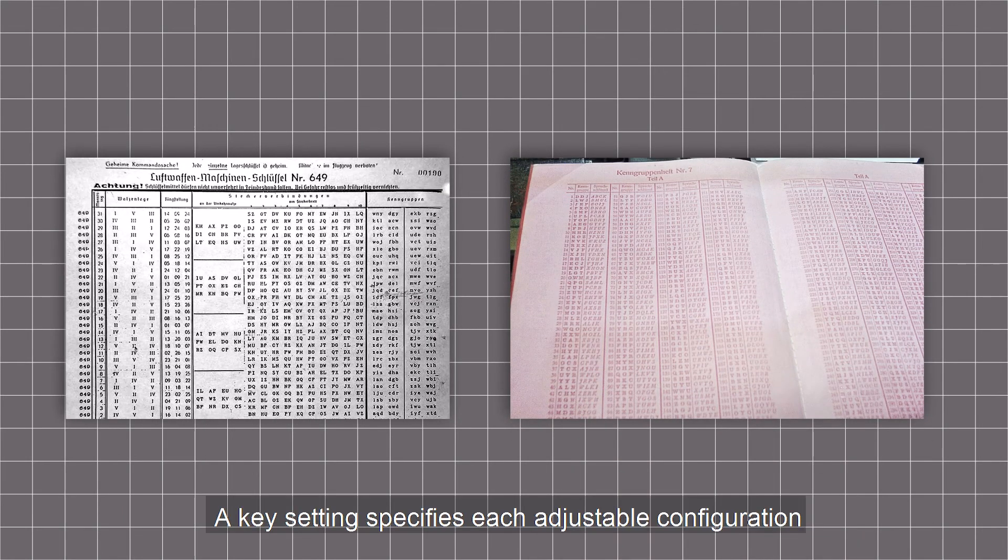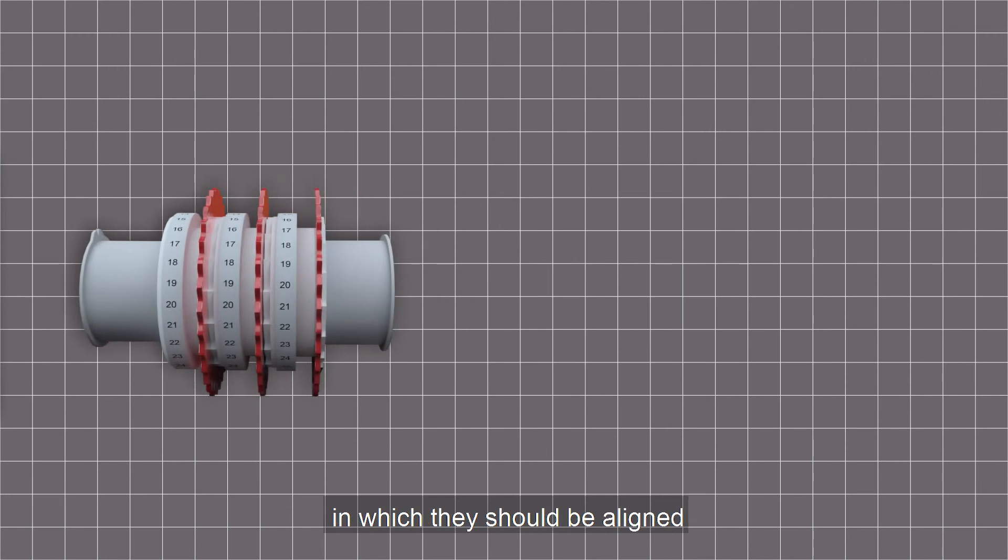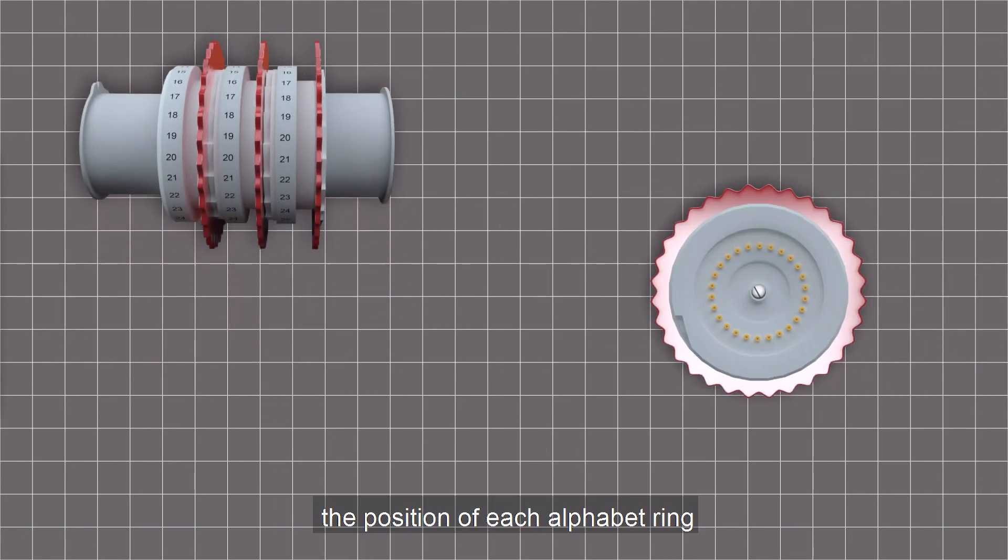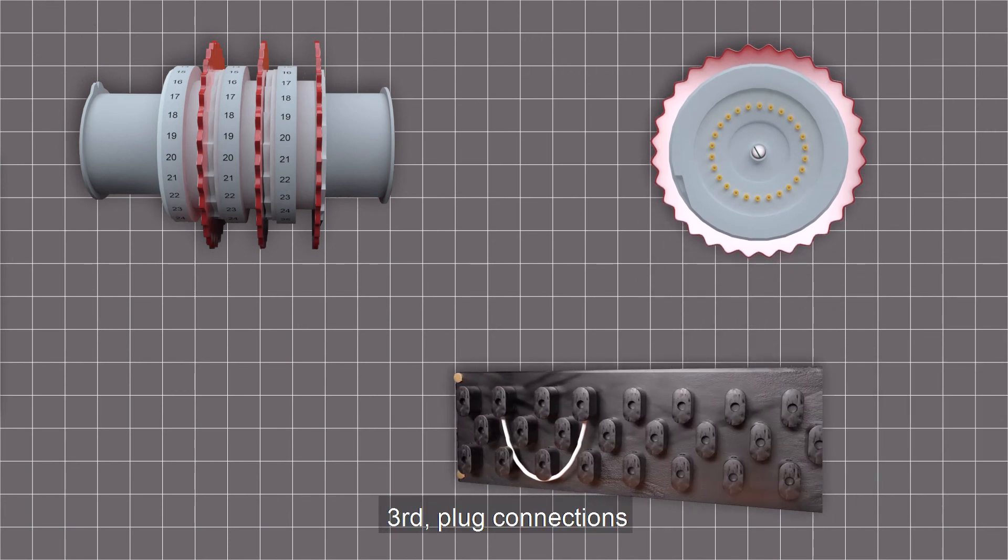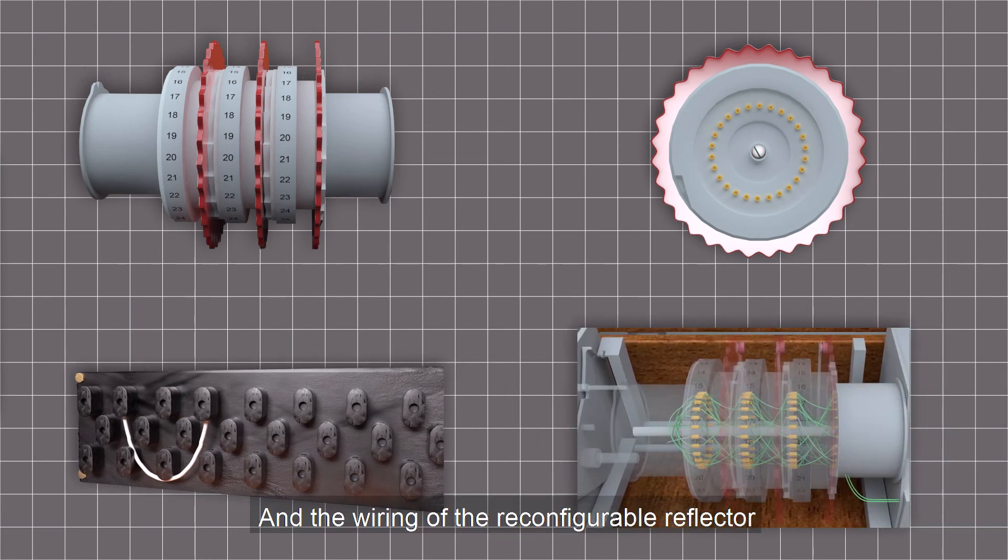A key setting specifies each adjustable configuration. First, wheel order, the choice of rotors and the order in which they should be aligned. Second, ring settings, the position of each alphabet ring. Third, plug connections, the connected pairs of letters in the plugboard. And the wiring of the reconfigurable reflector in very late versions.